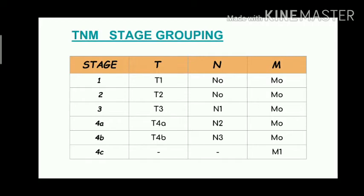M stands for metastasis. For stages 1, 2, 3, 4A, and 4B, there is no metastasis — M0. Only stage 4C has M1, meaning distant metastasis. So stage 4C is any T, any N, with M1. This is the TNM stage grouping.